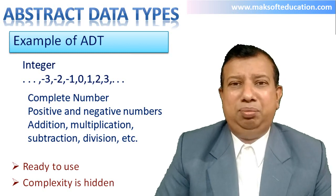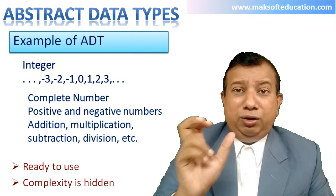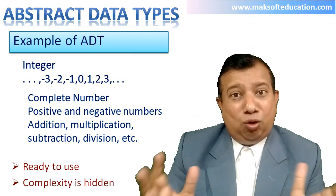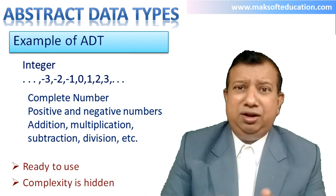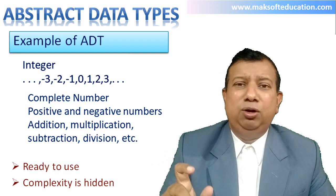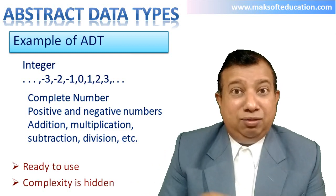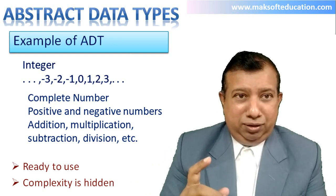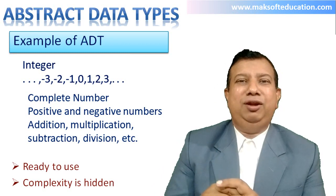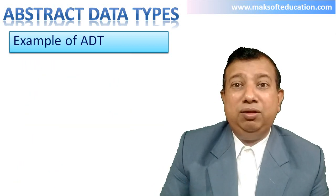The possible operations on integer include addition, subtraction, multiplication, division, modulo, and others. Now integer is a built-in data type in all programming languages. How it stores data and how these operations are carried out — this complexity is hidden inside the programming language. We directly use the 'int' keyword, so it is ready to use and its complexity is abstracted away.